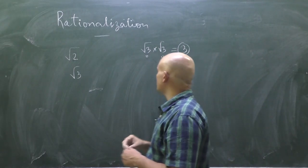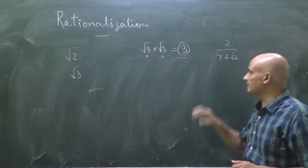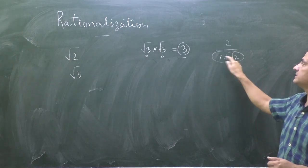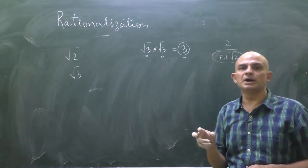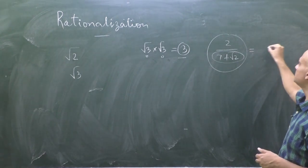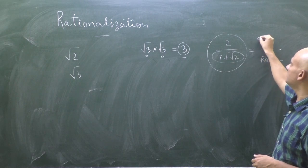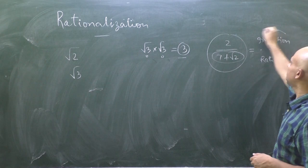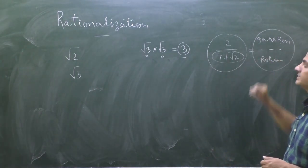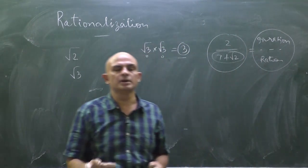In rationalization, suppose we have a denominator like 2 upon 7 plus root 2. Now 7 plus root 2 is an irrational number, but we want to convert this into an equivalent expression whose denominator is rational. The numerator may be irrational — this procedure is called rationalization of the denominator.